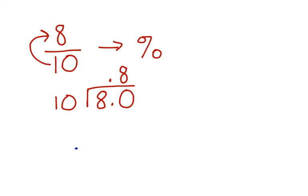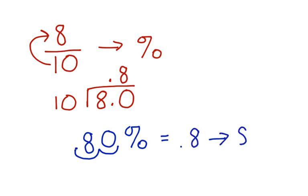Now, we have a decimal of 0.8. To convert a decimal to a percent, we move the decimal point two places to the right. So, 0.8 becomes 80%. Now, you know how to convert a fraction to a percentage and a decimal to a percentage in two different ways.